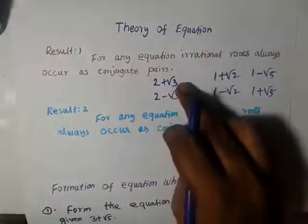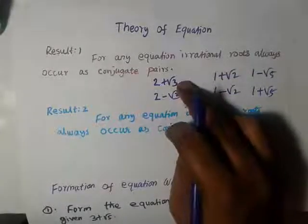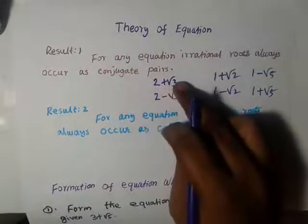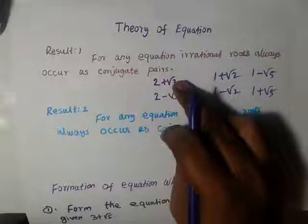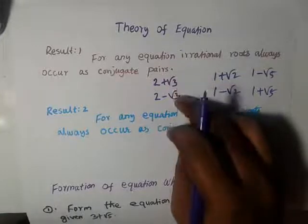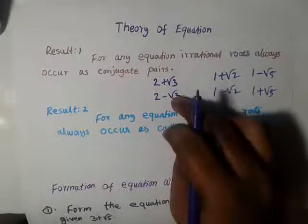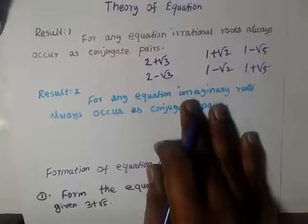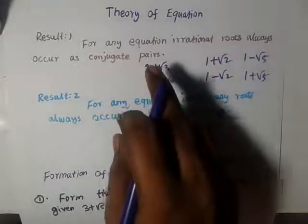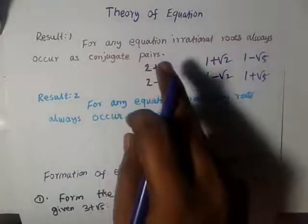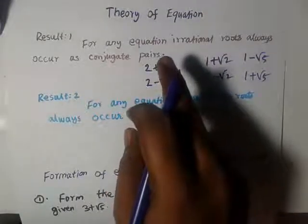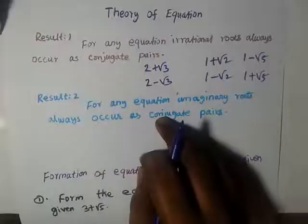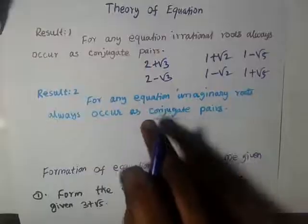So if you know one root, that is 2 plus root 3, then another root will be its conjugate by this theorem — the fundamental theorem. There are two equations, two theorems here.